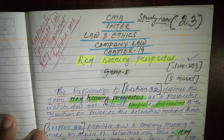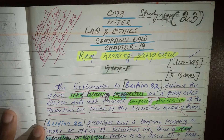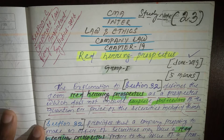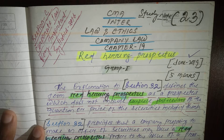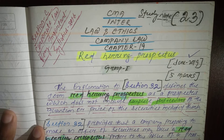So what is a Red Herring Prospectus? A Red Herring Prospectus, you can say, is an offer document. This offer document is filed by a company to the Securities Exchange Board of India (SEBI) when it plans to raise money from the public by selling shares of the company to investors.